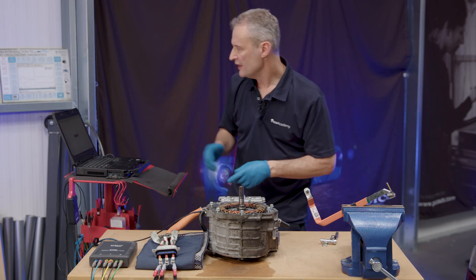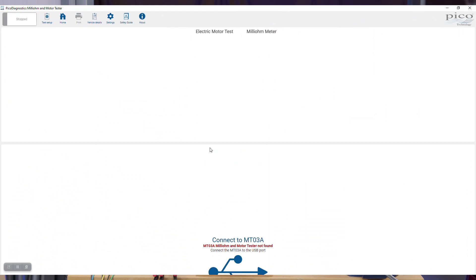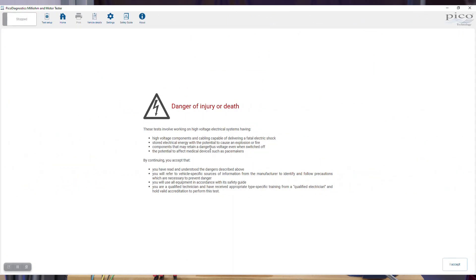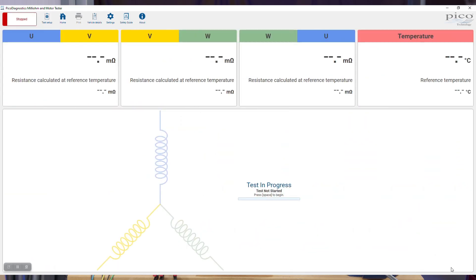Turning to the software, we click on electric motor, confirm connectivity, accept the warning. Here we have the UI for milli-ohm measurement and click the start button. You'll notice we have a connection test first of all. We'll read the temperature and then note how current flows through the phases. We'll have phase U to V first of all.